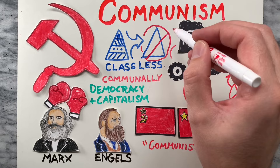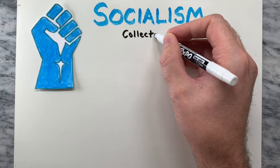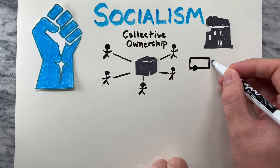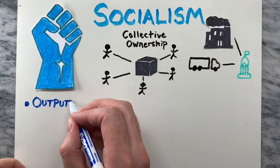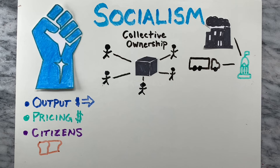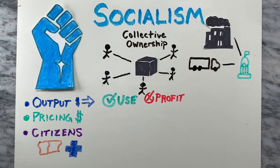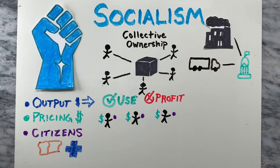Socialism is an economic and political system based on collective ownership of the means of production. All legal production and distribution decisions are made by the government in a socialist system. The government also determines all output and pricing levels and supplies its citizens with everything from food to healthcare. Socialist ideals include production for use rather than for profit, an equitable distribution of wealth and material resources among all people, no more competitive buying and selling in the market, and free access to goods and services.